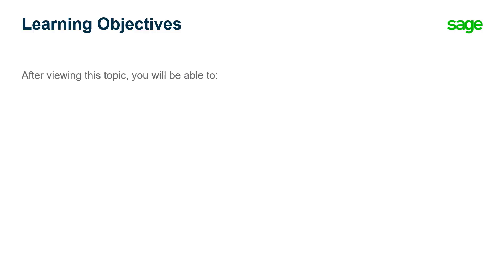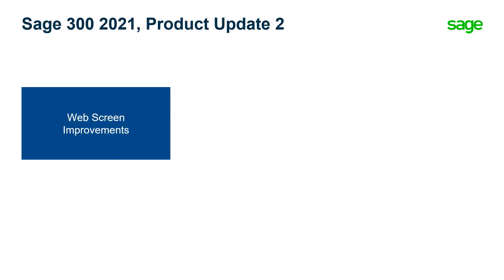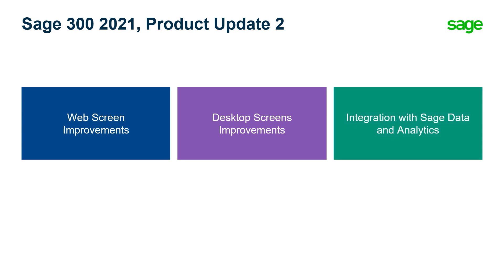Over the next few minutes, we will show you what's new in SAGE 300 2021 Product Update 2. This release includes changes in three main areas: web screen improvements, desktop screen improvements, and a new integration with SAGE Data & Analytics.